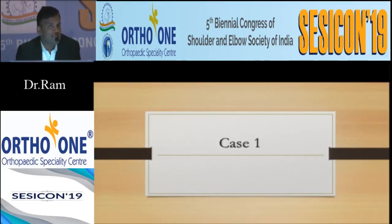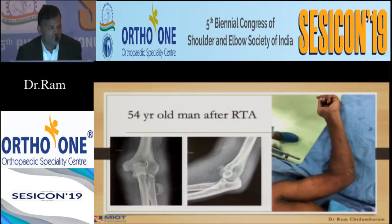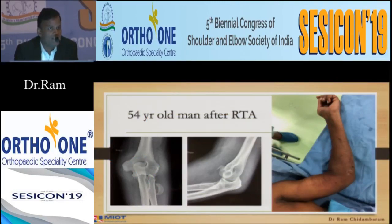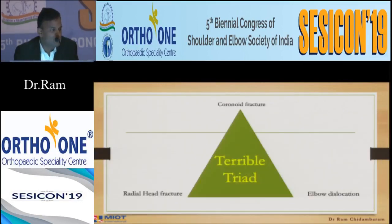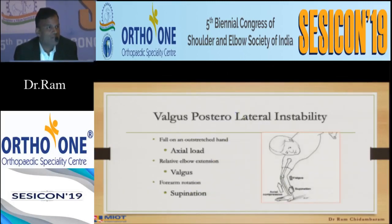Let us see other cases and how I dealt with them. This is a 54-year-old man after a road traffic accident coming to me with a swollen elbow and a small puncture wound on the medial side. The radial head is broken and smashed. On 3D CT scan: unstable elbow, coronoid fracture, radial head fracture — you all know it's a terrible triad. Understand the anatomy again. This is a posterolateral instability.